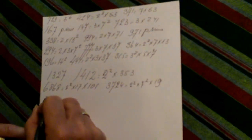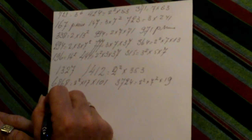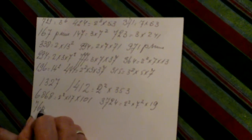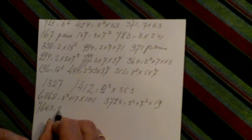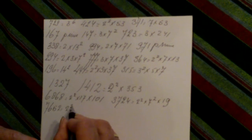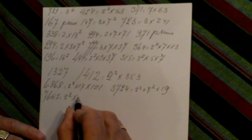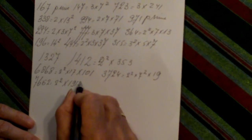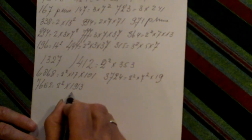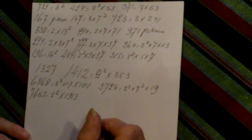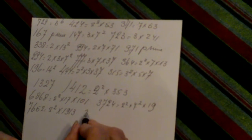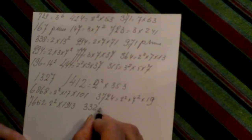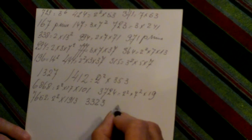7652 is two squared times nineteen hundred and thirteen, which is prime. 3323 is prime.